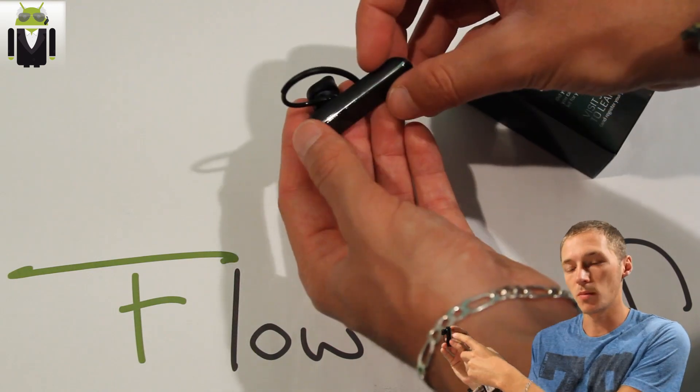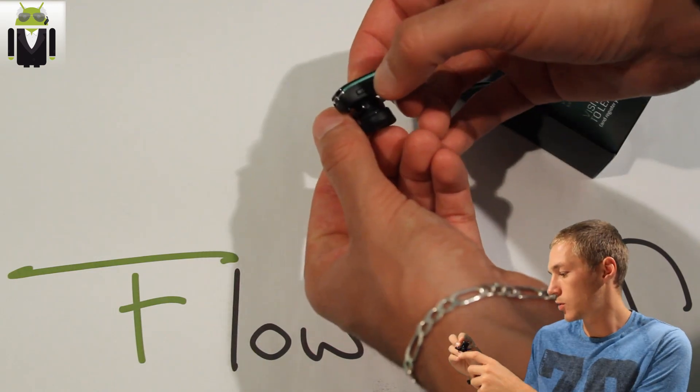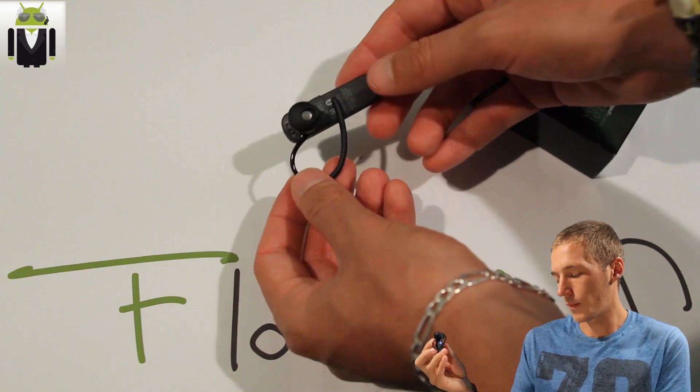You get also the volume plus and volume down button, and micro USB to load your Jabra EasyGo.